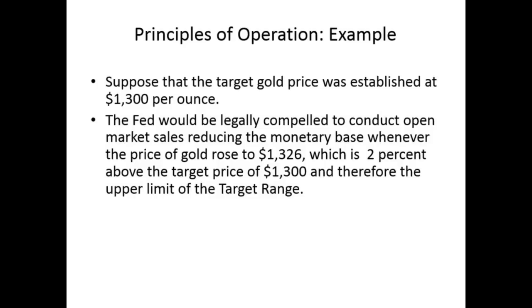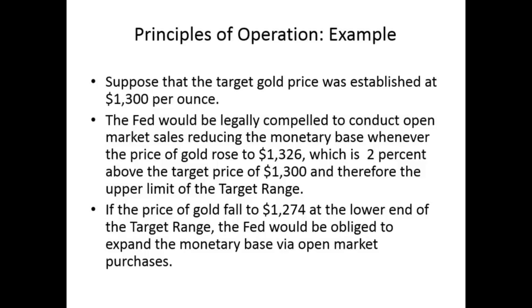Suppose the target was established at $1,300 per ounce. The Fed would be legally compelled to conduct open market sales when the price of gold rose above 2% over $1,300 — that's $1,326 — to reduce the amount of money in the economy. On the other hand, if it went below $1,274, to avoid deflation they would have to buy bonds and print new money. Where is gold in all of this? It's just a price of gold that they've fixed.